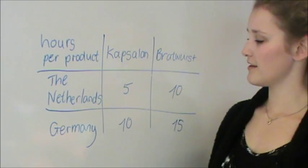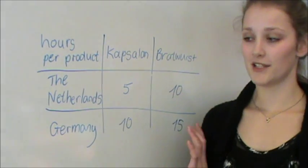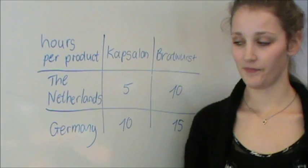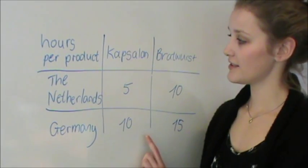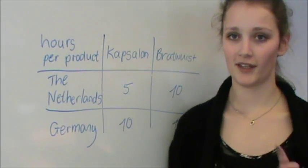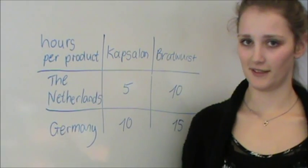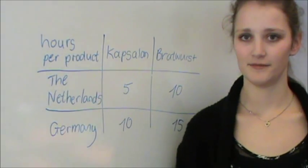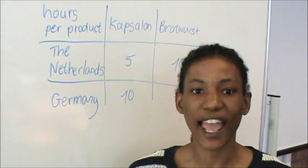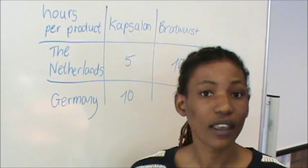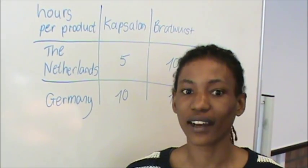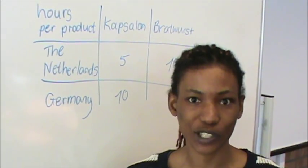We can see here that Germany is 50% worse at making bratwurst than the Netherlands. So Germany should focus on making the product they have the smallest disadvantage in — the product they are least worst at.